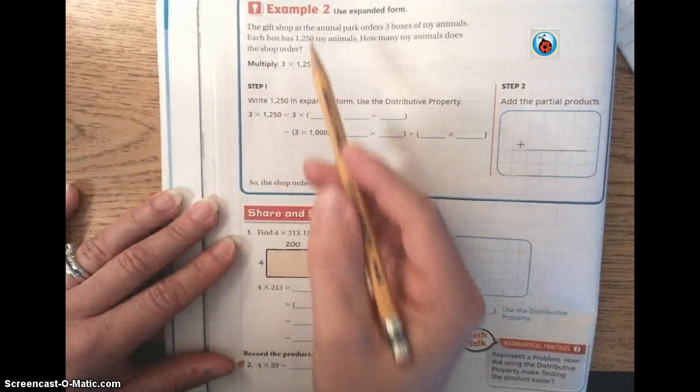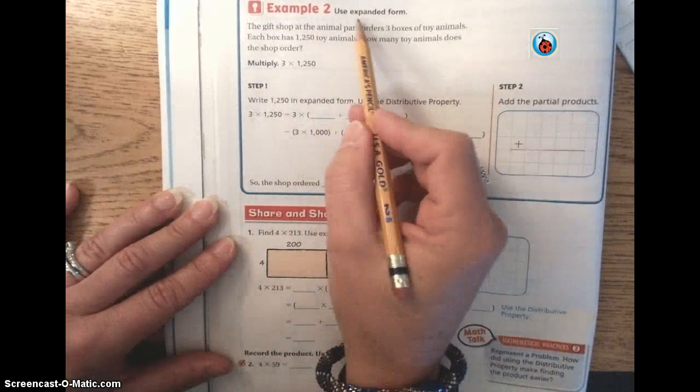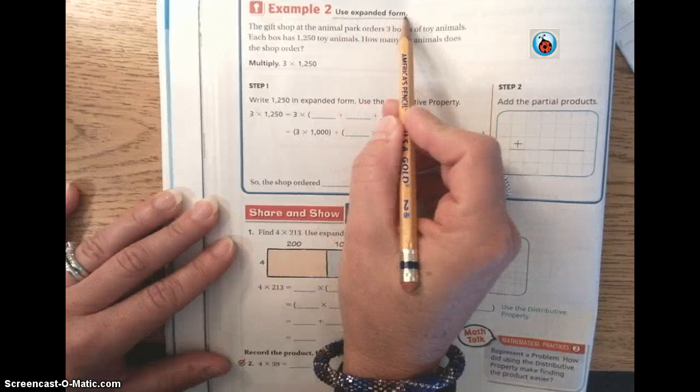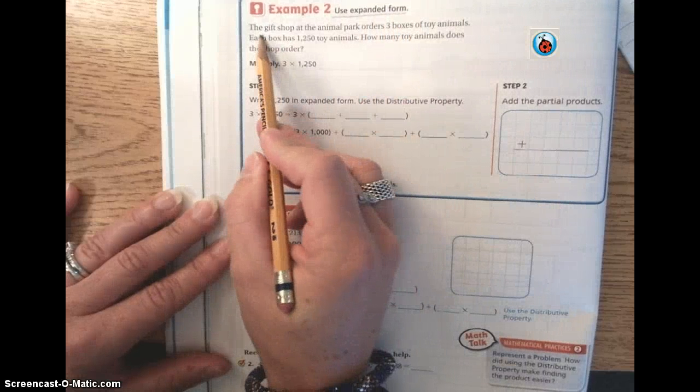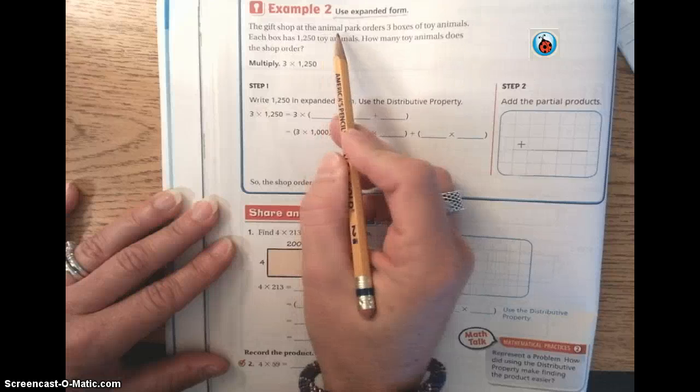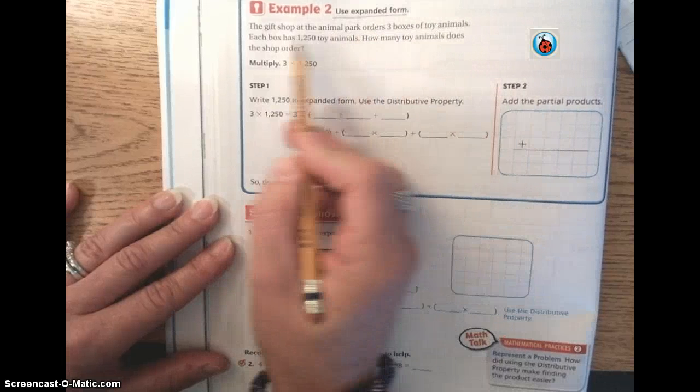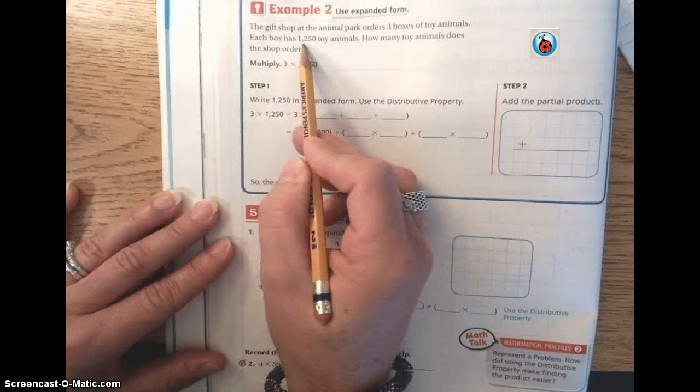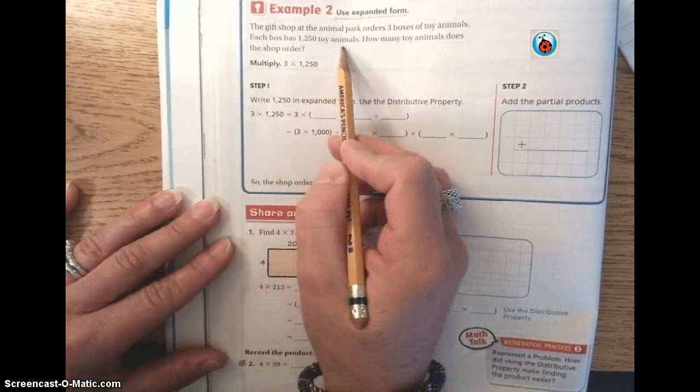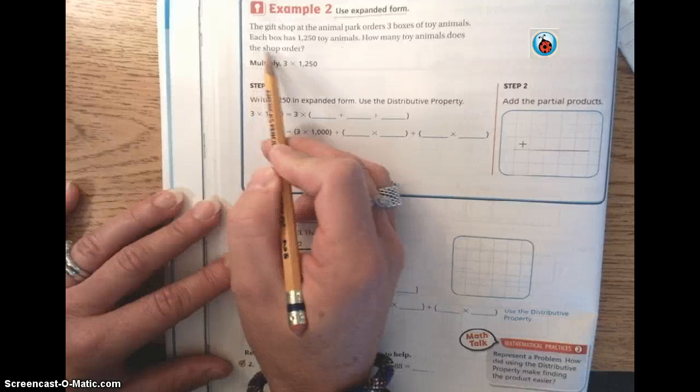Moving on to example 2, which is on page 94. Again, you're using expanded form. That's what we're focusing on here. The problem says the gift shop at the animal park orders three boxes of toy animals. Each box has 1,250 toy animals. How many toy animals does the shop order?